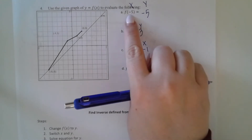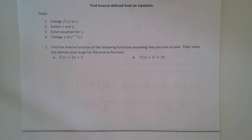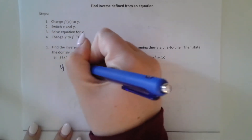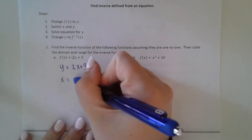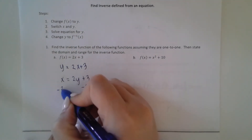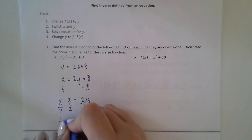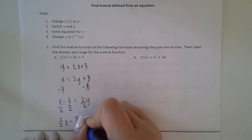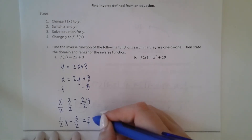Normal functions: the input is x, the output is y. In inverse functions, the input is y and the output is x. When we want to find an inverse function, we switch the x and the y. So we're first going to change our f of x to a y, then we're going to switch the x and the y, then we're going to solve for y. Dividing by 2, we get one-half x minus 3 over 2 equals y. Our last step is to change y into f inverse.